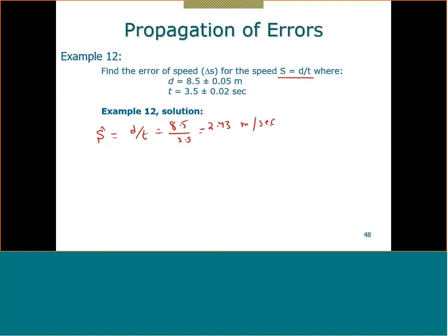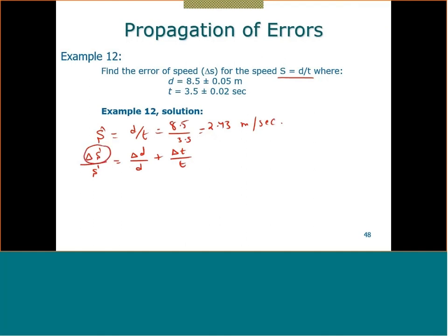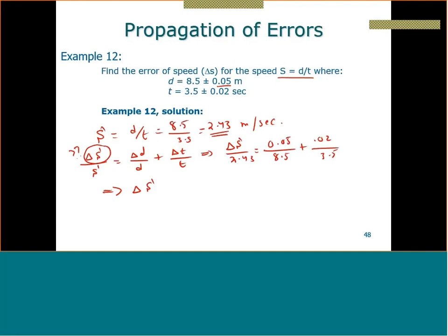Then: delta s / s = delta d / d + delta t / t = 0.05/8.5 + 0.02/3.5. Solving for delta s gives 0.0282. So s = 2.43 ± 0.0282 m/s. As simple as that — propagation of error is a very straightforward concept.